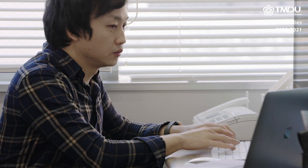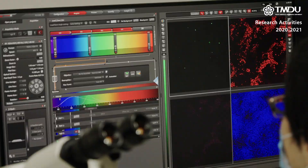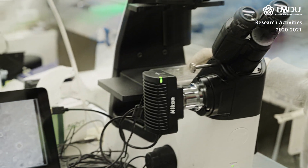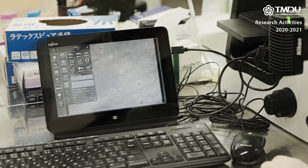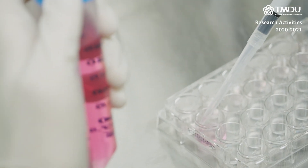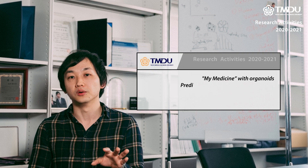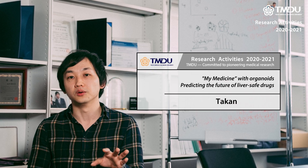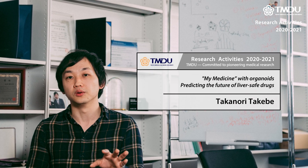Our lab is interested in knowing how organs are developing in a human body, and knowing that, we are trying to generate patient- or human-specific organs in a petri dish — what we call an organoid, or miniature organ-based approach.